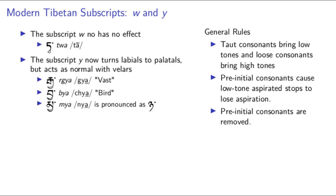The palatal glide ya subscript still represents palatalization. Using ya with the velar stops just palatalizes, so we get ya. But more notably, using ya with labial stops just palatalizes into the corresponding palatal stop. So bya in the Old Phonology is now pronounced cha in the word for 'bird.' These are the only consonants that can be written with a ya palatal glide, so we are done.